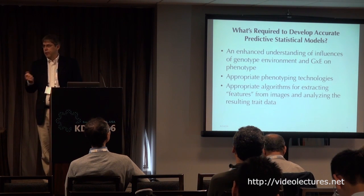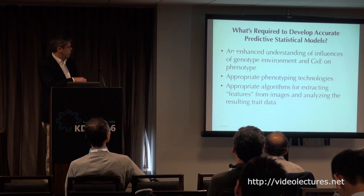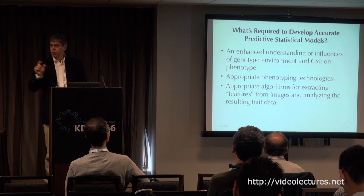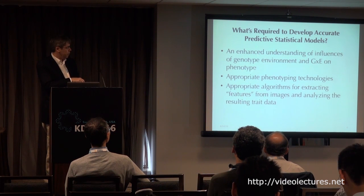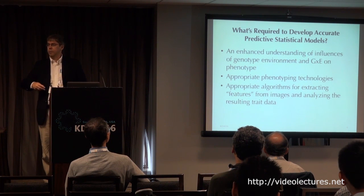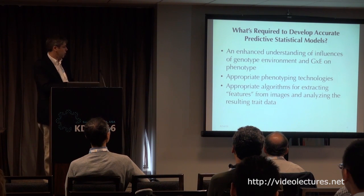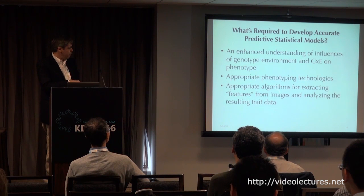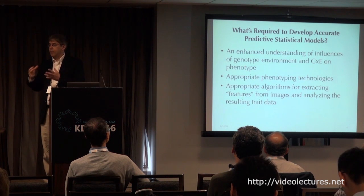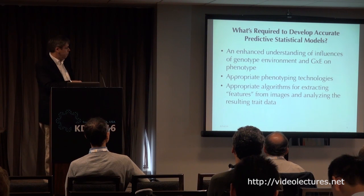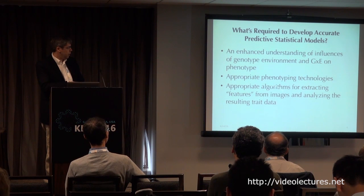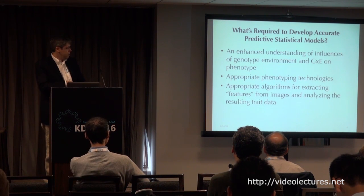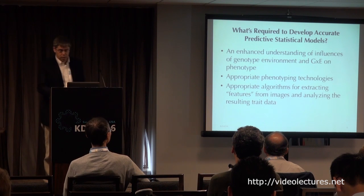What's necessary to achieve this goal? First, we need enhanced understanding of the influences of genotype, environment, and the genotype-by-environment interaction on phenotype. We need appropriate phenotyping technologies that can be deployed in fields. And we need appropriate algorithms for extracting features from images and other kinds of phenotyping data sets, and then analyzing the resulting trait data.